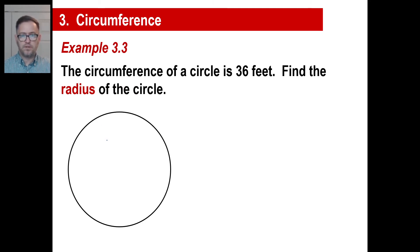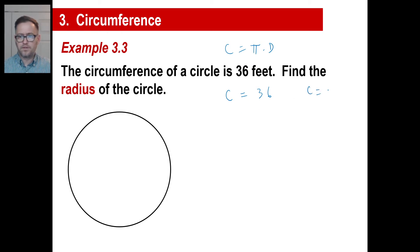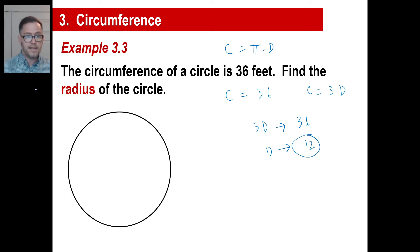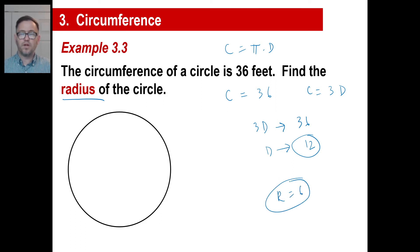The circumference of a circle is 36 feet. Find the radius of the circle. The circumference is 36. The formula for circumference is pi times the diameter — we'll approximate pi as about 3, so circumference is about 3 times the diameter. If 3 times the diameter is 36, then to find one diameter we divide by 3: 36 divided by 3 is 12. That's the diameter. But they want the radius — if the diameter is 12, the radius is about 6.